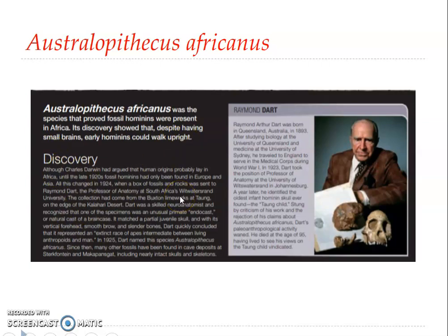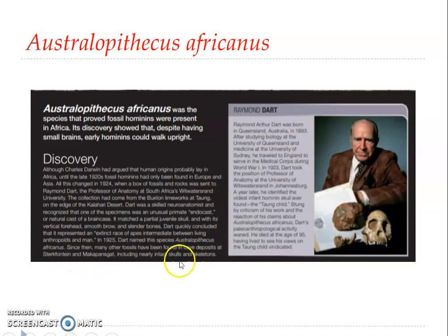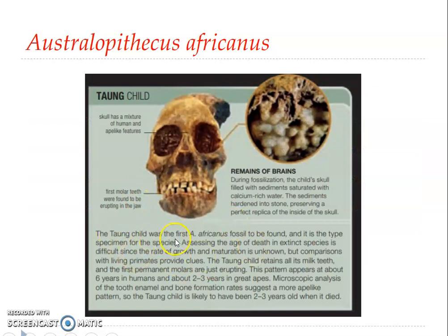The Taung Child was discovered by Raymond Dart in 1924 from a box of fossils and rocks sent to him. Dart was a professor of anatomy at the University of the Witwatersrand in South Africa. The collection was made from the Buxton Limeworks at Taung on the edge of the Kalahari Desert — which may be why it is referred to as the Taung Child. In 1925, Dart named the species Australopithecus africanus. The Taung Child was the first Australopithecus africanus fossil found and serves as the type specimen for the species.